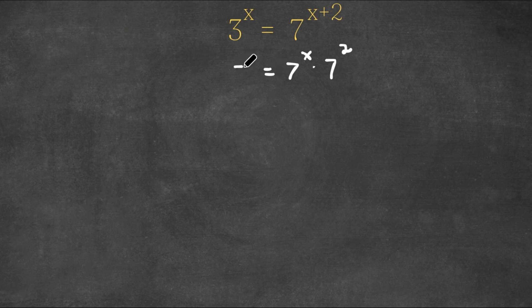So now we have 3 to the power of x is equal to 7 to the power of x times 7 squared. Now, I'm going to divide both sides by 7 to the power of x.